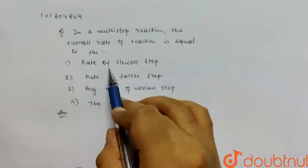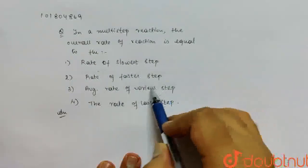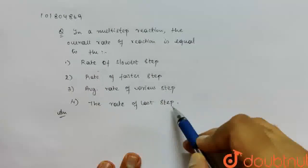So, let's start with the options. Rate of the slowest step, rate of the fastest step, average rate of various steps, and the rate of the last step.